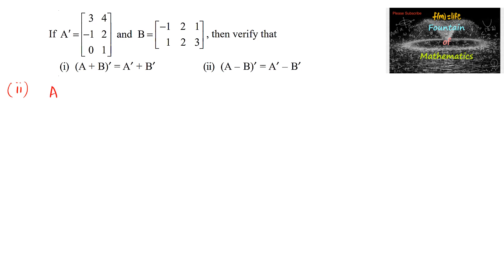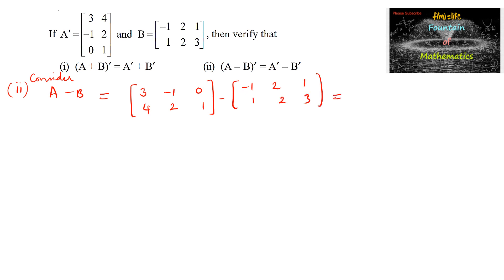Now let us verify the second property. Consider A minus B: matrix A [3, -1, 0; 4, 2, 1] minus matrix B [-1, 2, 1; 1, 2, 3]. Subtracting corresponding elements: 3 - (-1) = 4, -1 - 2 = -3, 0 - 1 = -1, and 4 - 1 = 3, 2 - 2 = 0, 1 - 3 = -2. So A - B = [4, -3, -1; 3, 0, -2], a 2×3 matrix.